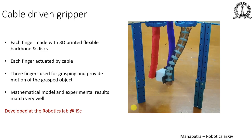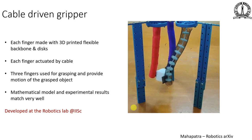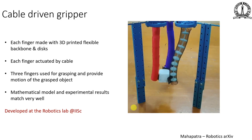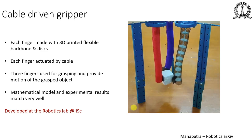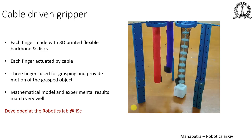All three fingers of the cable-driven gripper are identical, but depending on the motion given to each finger, the grasped object can be moved in different ways.